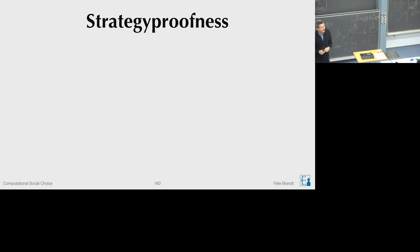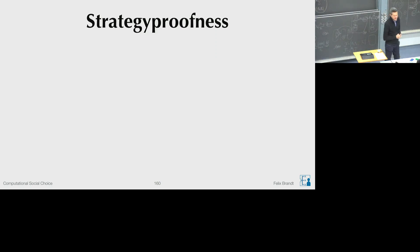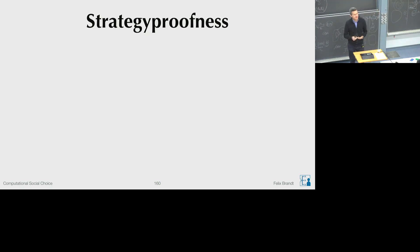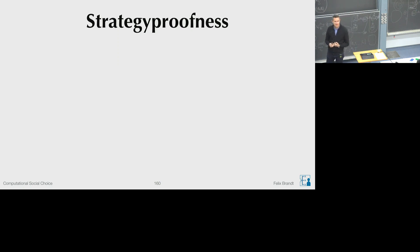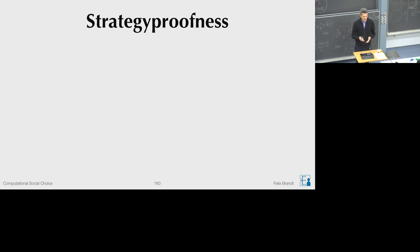Good afternoon. In today's lecture, we are talking about lying about one's preferences, because this is a topic that we have somewhat neglected so far. I did mention strategy-proofness to some extent in the first lecture, where we made the assumption that for simplicity we know the agents' preferences, or that the social choice function can just take as input the preferences of the agents.